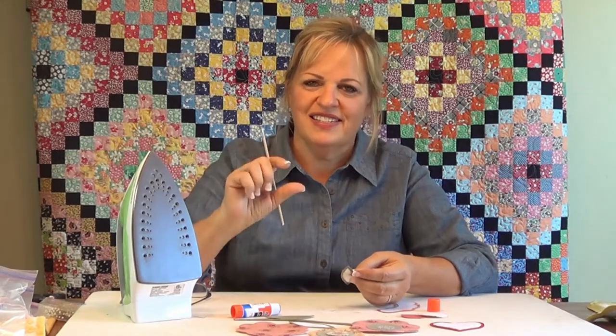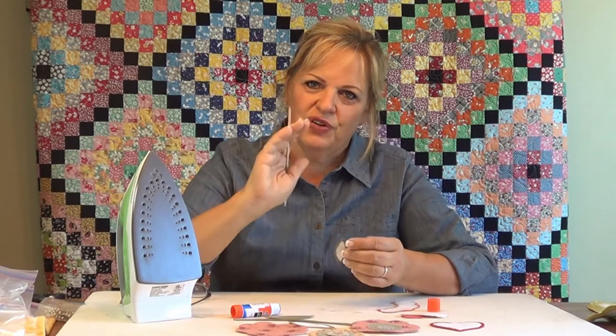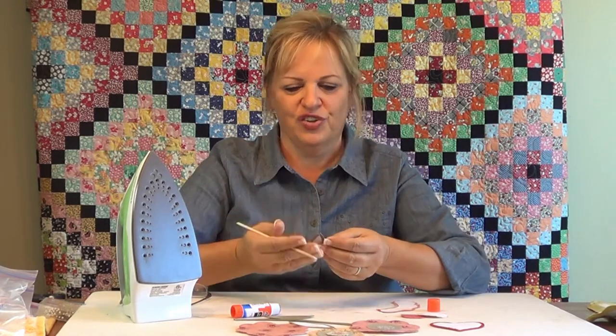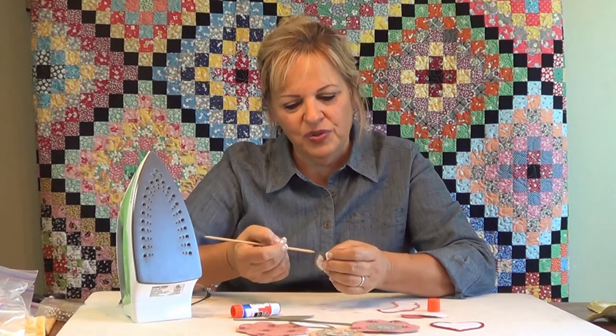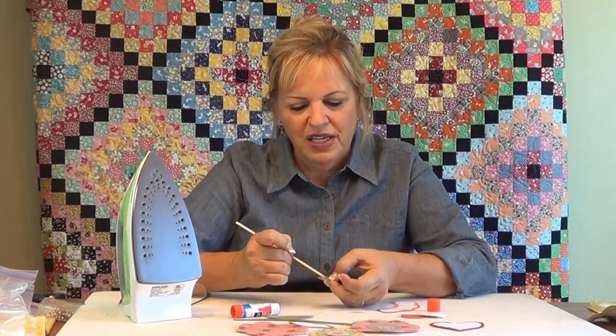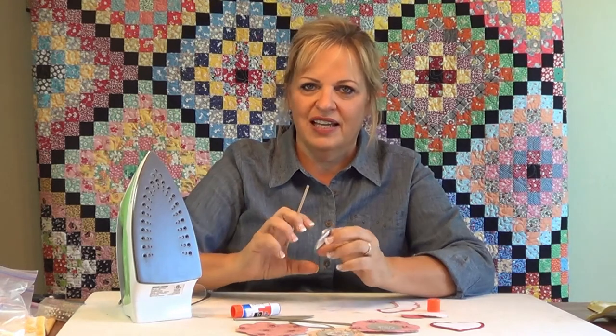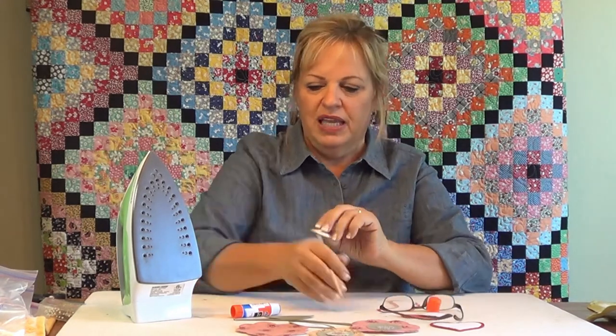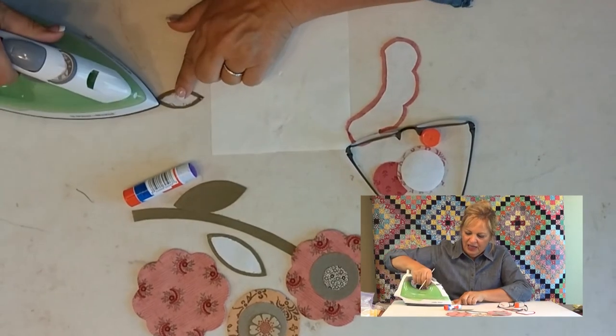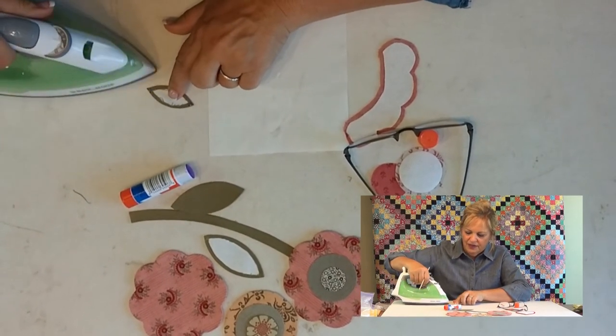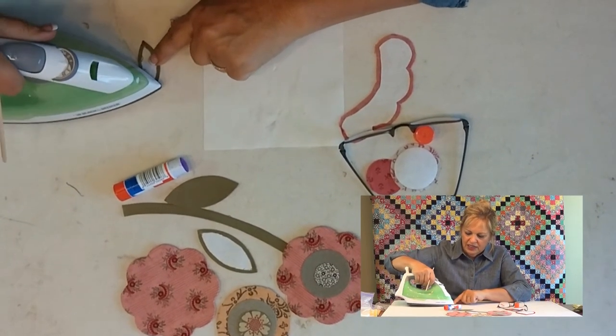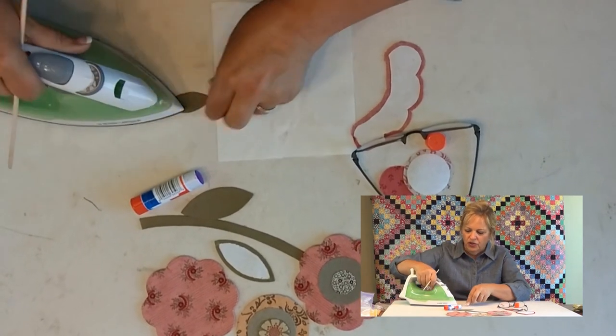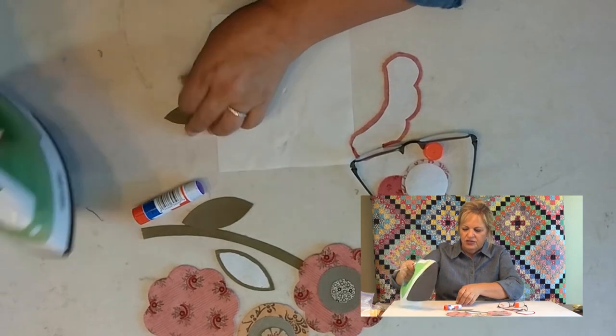Now if you have ever done any hand needle turn applique, one thing about the points, a point is kind of bulky. If you notice on a needle turn applique point. And so I like turning this dog ear back onto itself because after this is sewn down and soaked, then it kind of beefs up that point a little bit. And so you get a really great applique look on your finished product. And now we're going to heat set it. It's still a little bit sticky because of this steam. So you want to heat set that down. Sometimes I'll just turn it over, heat set it on the other side too.